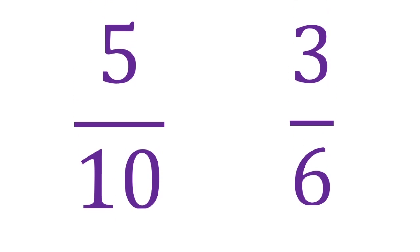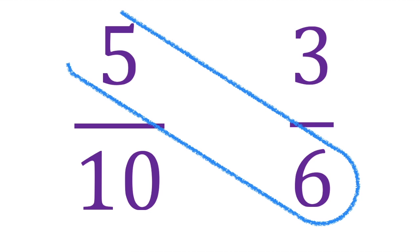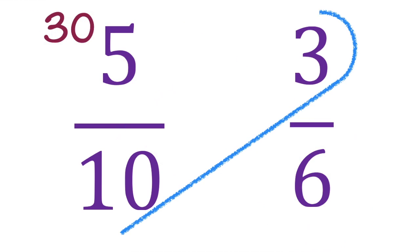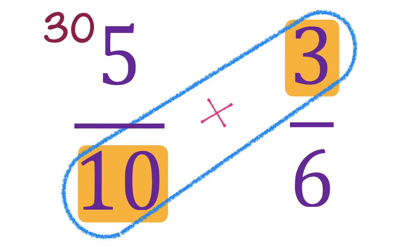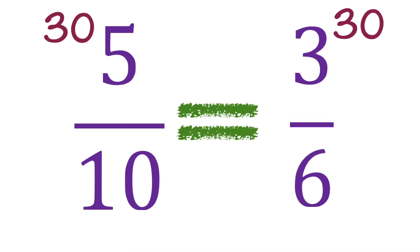How about if we have 5 tenths and 3 sixths? Let's compare this one. Let's multiply the numerator of the first fraction by the denominator of the second fraction. 6 times 5 is equal to 30. Let's multiply the denominator of the first fraction by the numerator of the second fraction. 10 times 3 is equal to 30. Let's compare 30 and 30. So, 5 tenths is equal to 3 sixths because we have 30 and 30.